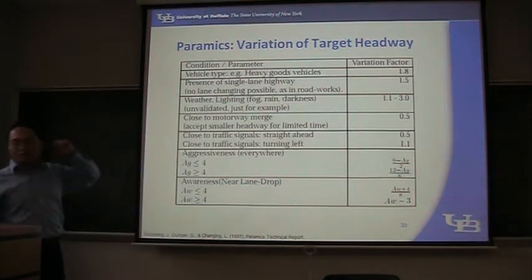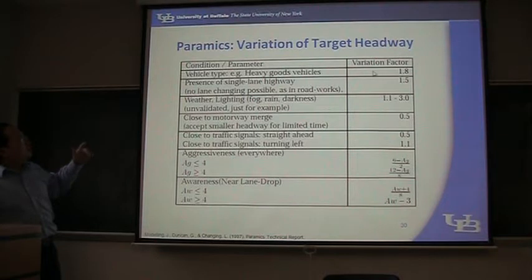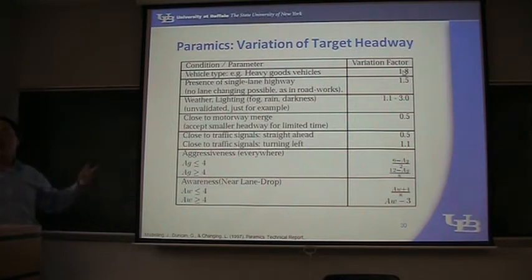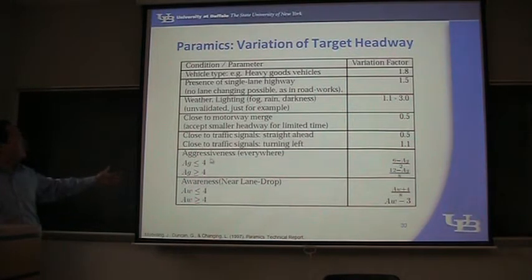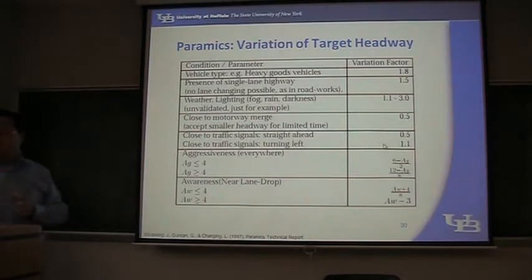For example, if the vehicle type is heavy truck, then the time headway will be multiplied by 1.8, and then the target headway will be 1.8 seconds. Similarly, with different aggressiveness, you are going to get different variation factors, and then you can calculate the target headway for each vehicle.